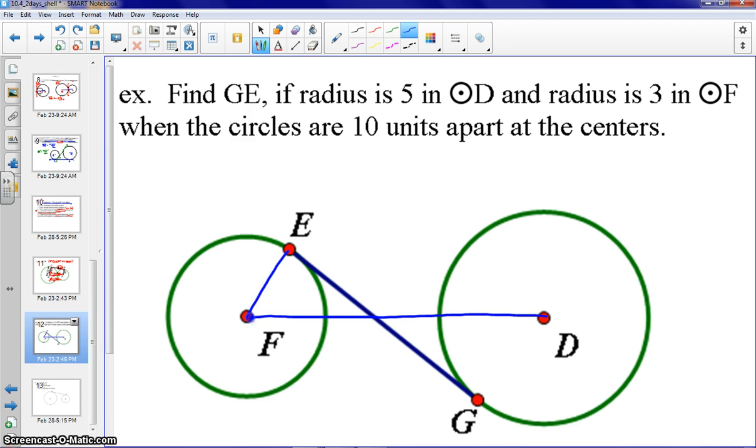And, second step, the radii to your points of tangency. We can also read the problem here and label a couple different things. We want to find GE, so we could call that X. I'll call that X with the red in here. I'm highlighting that in red. Radius is 5 in circle D, so we'll label that as 5. Radius of 3 in circle F. And, the circles are 10 units apart at the centers. Again, this can be a little bit difficult to draw, so I'll label this at the top. So, from F to D is 10 units apart.